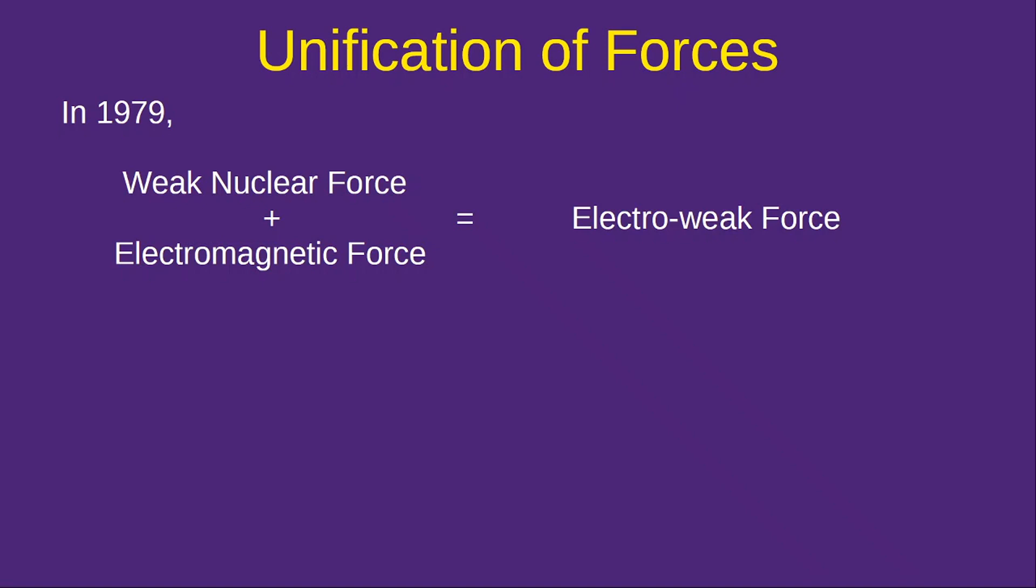Many physicists in the past have tried to explain the different forces as separate aspects of one particular force. In 1979 weak nuclear force and the electromagnetic force were combined together as the electro weak force. It was experimentally verified in 1984.